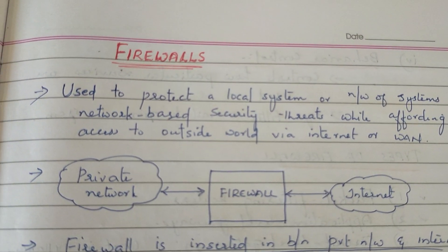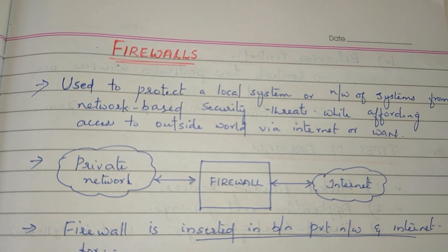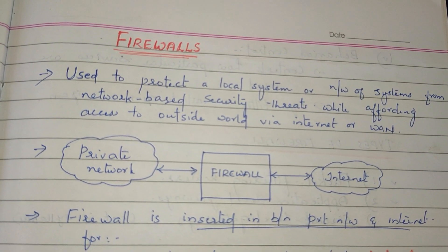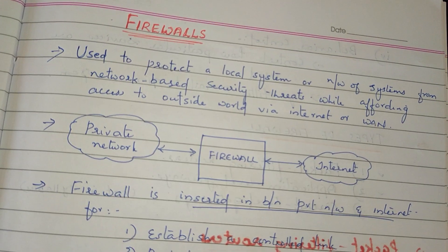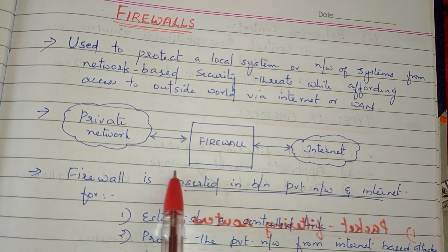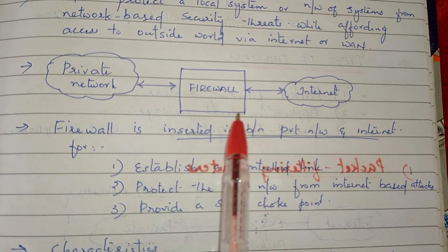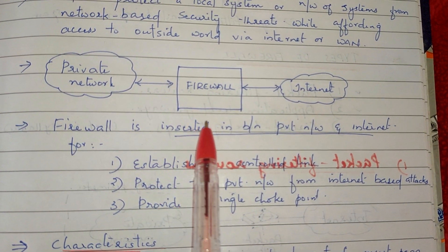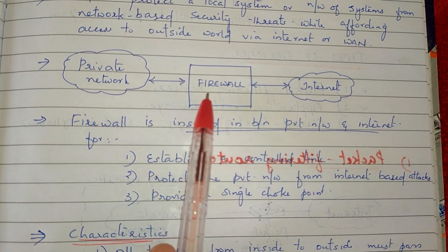We have a firewall in the 6th module. We have a local system or group system, and we use a threat seal to protect and use the firewall. We have a private network and insert a firewall, so we establish a control link. That is why we protect the private network and provide a single choke point.